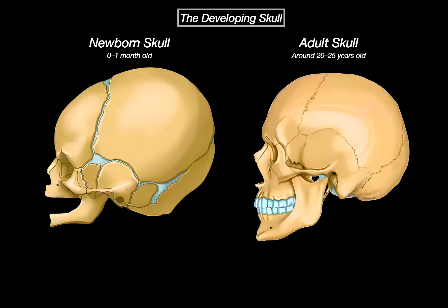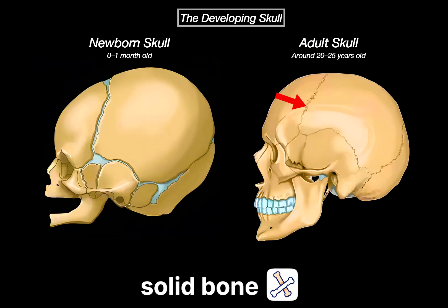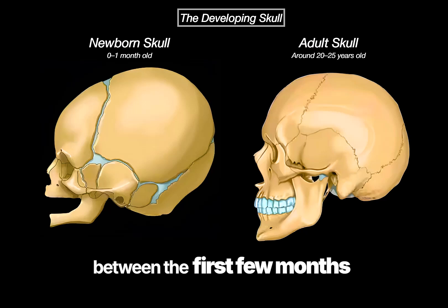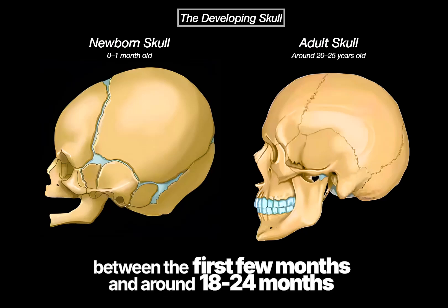Over time, these close off and get replaced by solid bone. The timing varies slightly between individuals, but most fontanelles begin to close between the first few months and around 18–24 months of age.